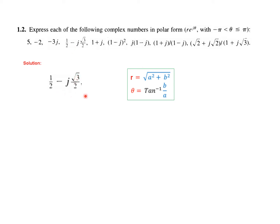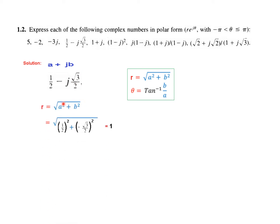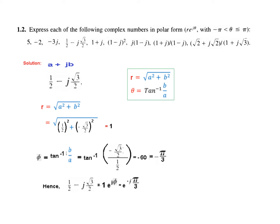The next question involves a complex number written in a plus jb form, where a is minus root 3 over 2 and b is the negative imaginary part. Putting the values into the formula, the magnitude r comes out to be 1. Then we find the angle tangent inverse of b over a, which when solved with a calculator gives minus 60 degrees, converting to minus pi by 3 radians. The final answer is 1 times e raised to the power minus j pi by 3, which equals e to the minus j pi by 3.